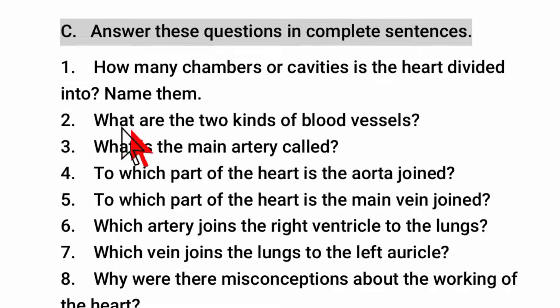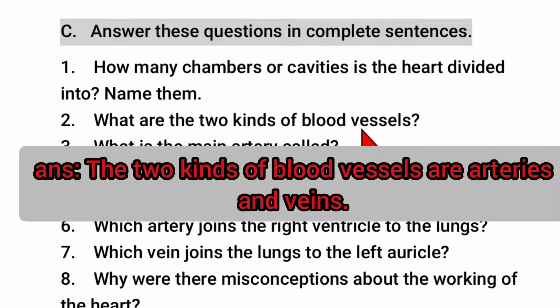What are the two kinds of blood vessels? Answer: The two kinds of blood vessels are arteries and veins.